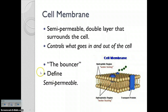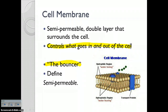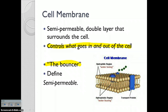Next up we have the cell membrane — this is our bouncer of the cell, like a bouncer from a club who controls what goes in and out of the building. Our cell membrane controls what goes in and out of the cell. A cell membrane is semi-permeable, which means it doesn't let just anything in and out — it's permeable only to certain items. So the cell membrane is a semi-permeable double layer that surrounds the cell and controls what goes in and out. It is found in every cell type: bacteria, animal, and plant.